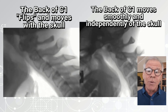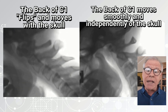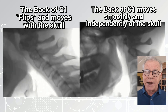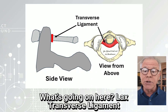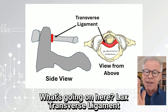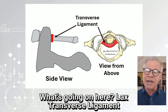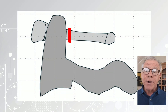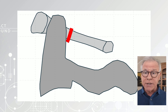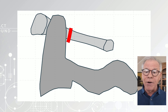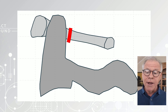Now the only way that I can think that's happening is that you have to have a loose transverse ligament for that to work, because that ligament is binding C1 to C2. So here, if we model it, you can see a loose transverse ligament would allow this kind of motion to occur.